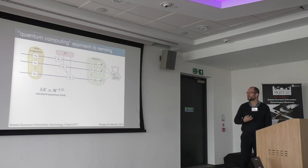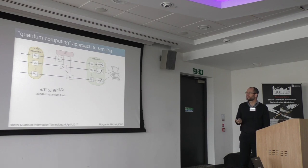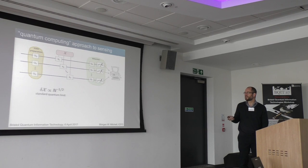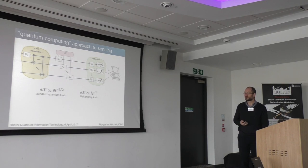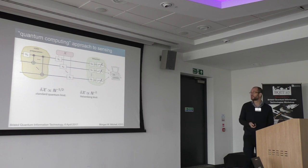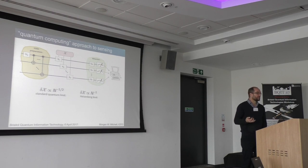We know the quantum metrology problem as this: you start with a number of individual systems, which you might think of as qubits, and they interact with the environment, they interact with some unknown parameter that changes their state and you're trying to figure out what this is. If you do this in a naive way and do an independent preparation of your qubits, then the best you can do is the standard quantum limit, which gives you an uncertainty that scales as one over square root of n. If you're smart and you have a quantum computer, you can prepare some input state that allows you to reach the Heisenberg limit, which is a better sensitivity given the same resources.